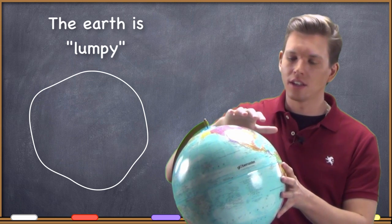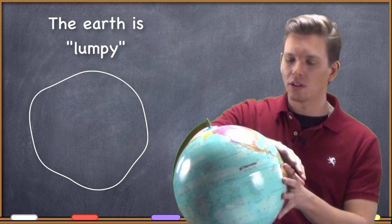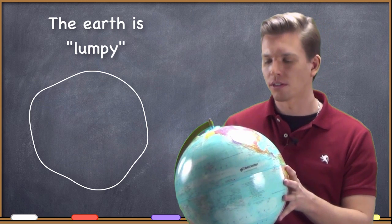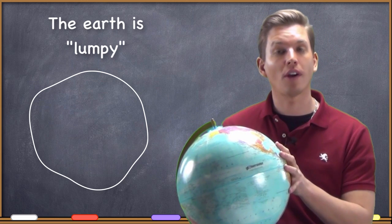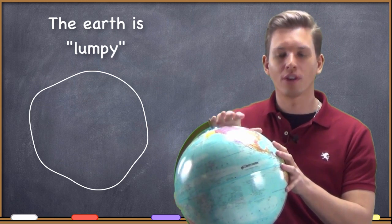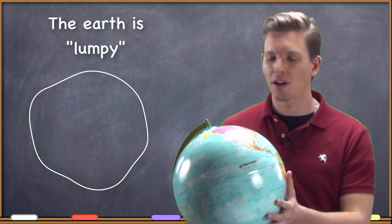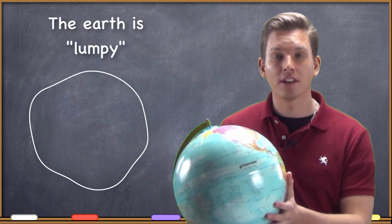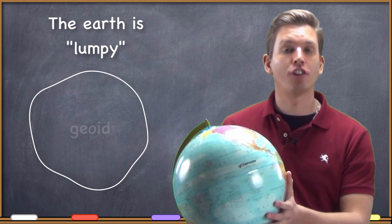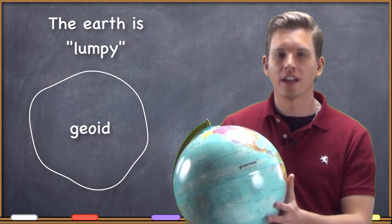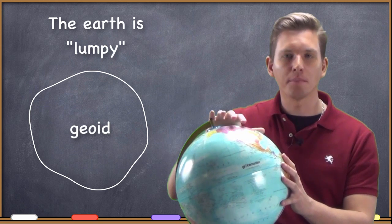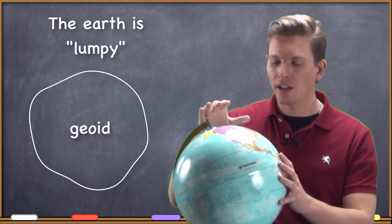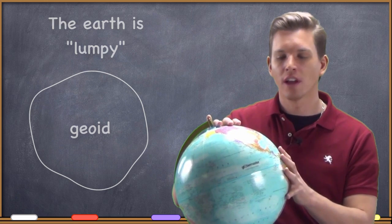Little places that are a bit more recessed, little lumps across the surface of the Earth. Sometimes it's very important to account for those lumps across the surface of the Earth. When you do that, you generate something called a geoid.